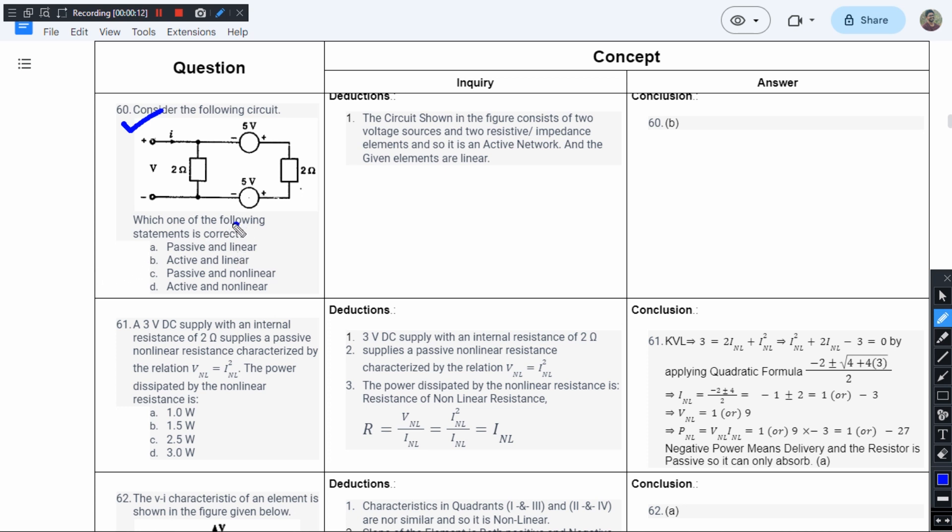They're asking which statement is correct. Option A says this is passive and linear. We have got two voltage sources, so it cannot be passive. Option A is eliminated. Option B says it is active and linear.